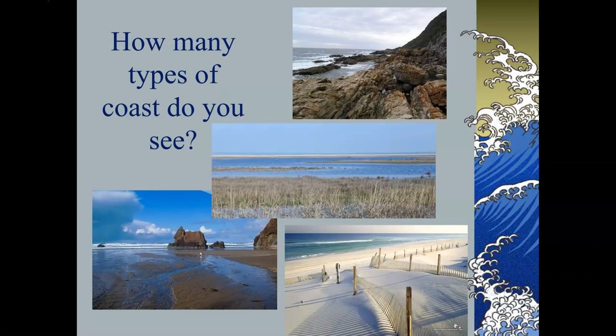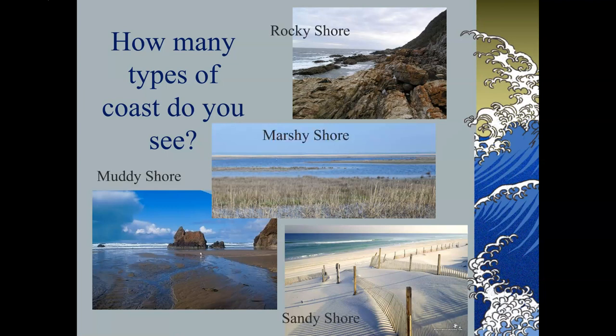You may or may not remember that the intertidal zone is located at the edge of the ocean between the highest high tide line and the lowest low tide line. Basically wherever the water comes up to during high tide and wherever the water retreats to during low tide is the intertidal zone. The intertidal zone can be rocky, sandy, marshy, or muddy. I think of the rocky shore when I think of the intertidal zone — those waves pounding against the rocks, water filling the tide pools and then retreating, leaving a little water behind with all kinds of organisms you can see and explore.